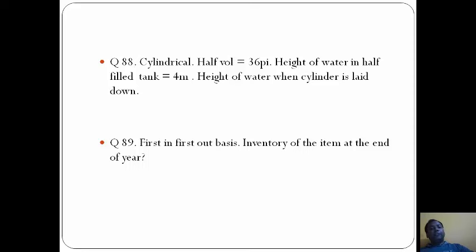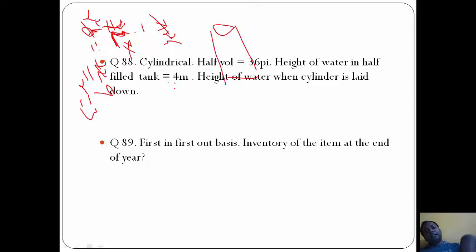There is a cylinder, its half volume is 36π, that is πr²h equals 36π. Cancel π - r²h equals 36. Height is 4 meter, this is half, so total is 8. So πr²h is 72. When h is 8, this becomes 9, so r becomes 3. When we tilt it like this, since there is half water, the water will come up to the radius. So the height of the water when this is laid down is 3 meters. The answer is C.